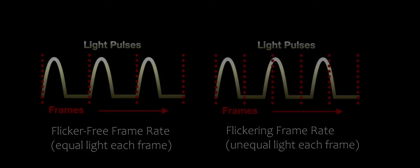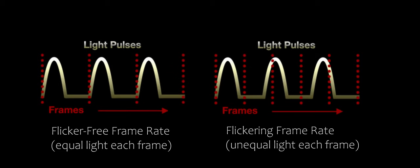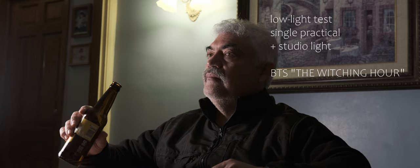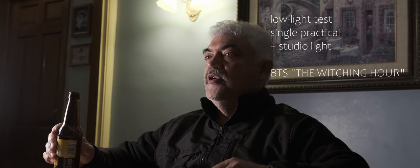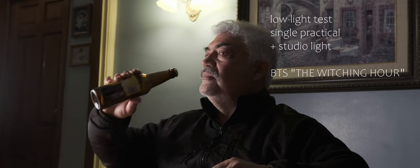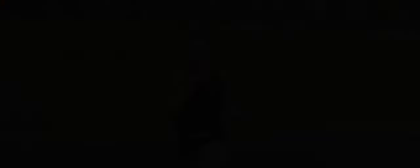Without diving too deep into the math, let's assume we're using a standard 24 frames per second at 180-degree shutter angle, or 1/48th in shutter speed. This could cause some flicker. If shooting at 60 hertz in North America, you could remove flicker by dialing in your shutter speed to 1/30th or up to 1/60th — these are intervals of 60.